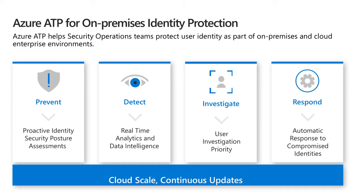Around prevention, this is running assessments to proactively identify and correct hidden vulnerabilities, thereby reducing the attack surface. Detection is doing real-time analytics and data intelligence — detecting issues through high-confidence alert signals and user behavioral anomaly signals in real time. Investigation is where Azure ATP assigns an investigation priority score to help identify and prioritize investigations among all of the riskiest users in the organization. And respond is where we have automatic response to compromised identities to reduce response time through user risk policy management and integration with other products throughout the enterprise.